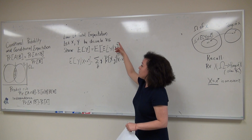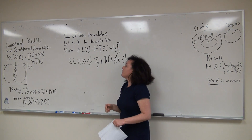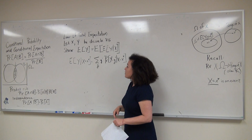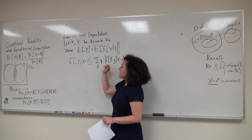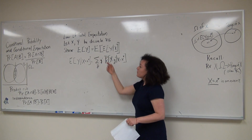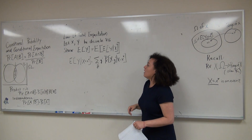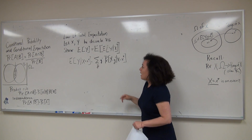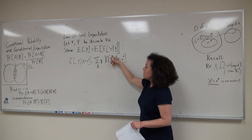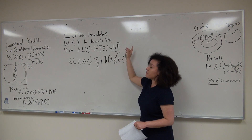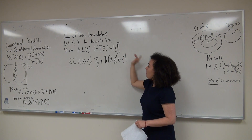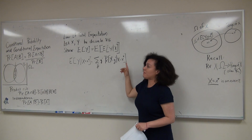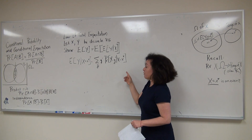Now we want to show the law of total expectation. We have two random variables X and Y, and we want to show that the expectation of Y is equal to the expectation of the expectation of Y given X. We are abusing notation here, which I will explain in a second — this is a very common abuse of notation — and I will also define conditional expectation carefully.